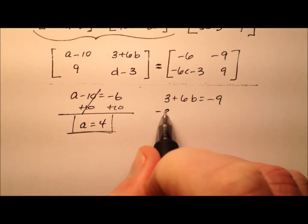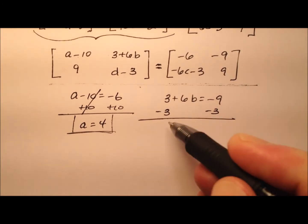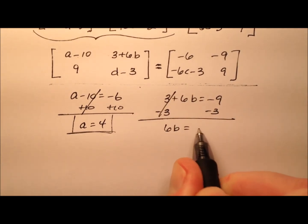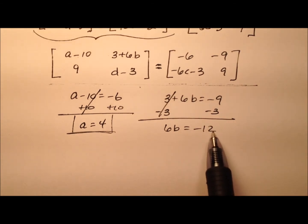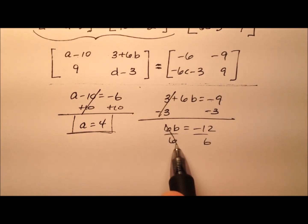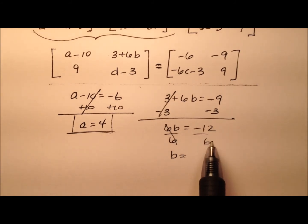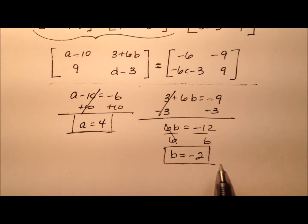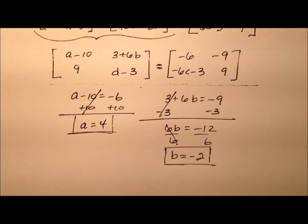And here I'm going to subtract 3 first from both sides to kind of start getting that B by itself. So 6B equals negative 12, because negative 9 minus 3 is negative 12. When I divide both sides by 6, I see that my B is going to be isolated, and negative 12 divided by 6 will give me negative 2. So now I have two of my values.